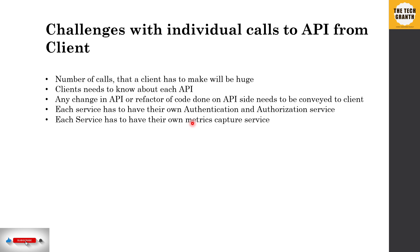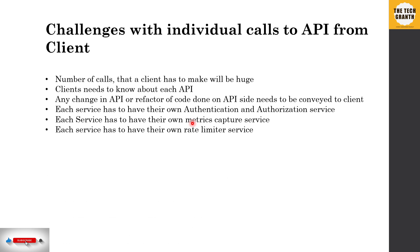Having to add these non-functional features to each service is a cumbersome and duplicative process. These are the core disadvantages that arise when the client makes direct one-to-one calls to each service — and this is where the API gateway comes into the picture.